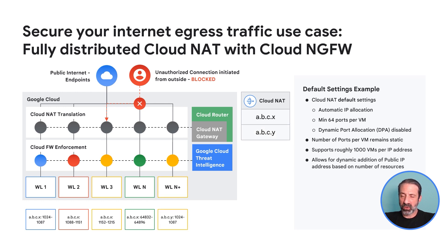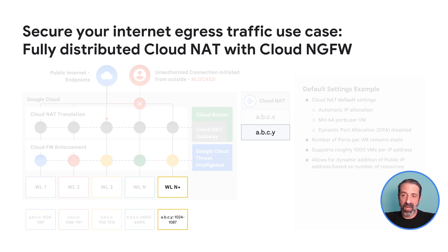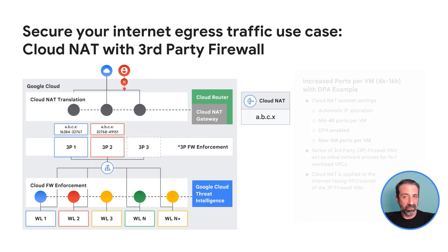But what happens if your scale grows to a point where all 64,000 ports are used? Because automatic IP allocation is configured, Cloud NAT simply adds an additional IP to the pool and can offer another 64,000 ports to your resources. If you require your VMs to open more than 64 connections to the same destination IP and port, you can configure Cloud NAT to allocate more ports per VM. This means Cloud NAT can support fewer VMs per public IP and may need to provision more public IPs to your Cloud NAT pool.